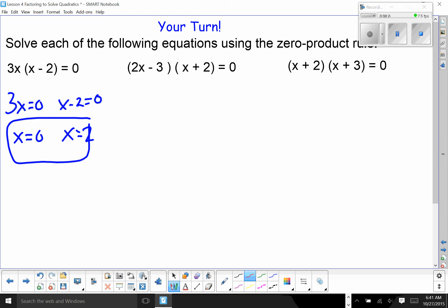Over here, I have 2X minus three is equal to zero, or X plus two is equal to zero. X equals negative two is easy here. This one, 2x is equal to 3, x is equal to 3 halves. These are the two places where this parabola crosses the x-axis.